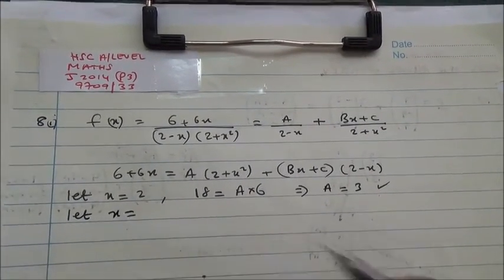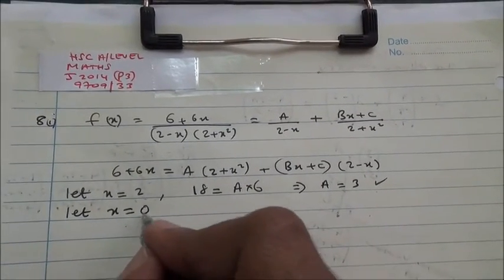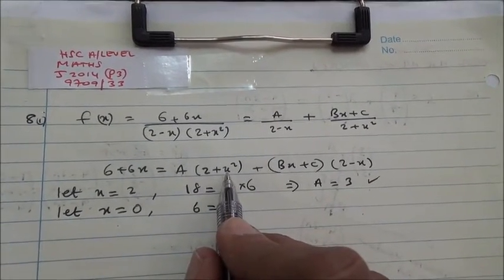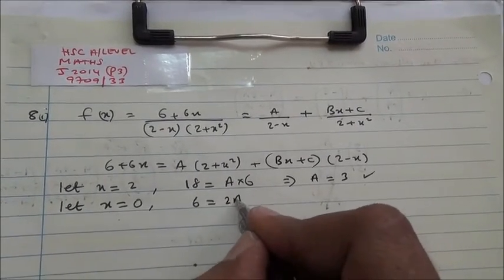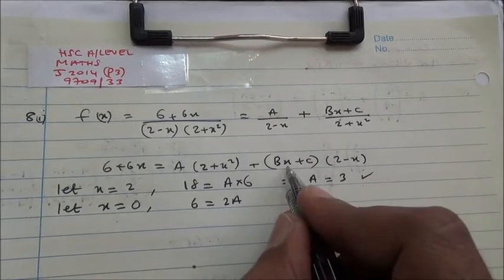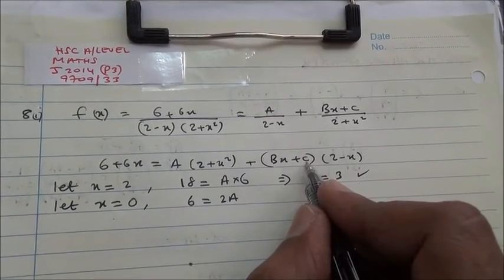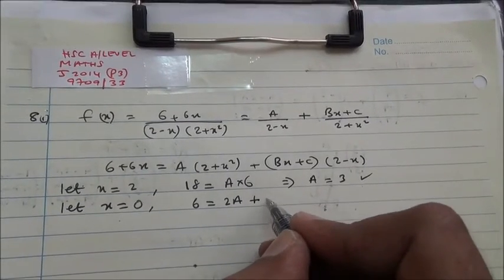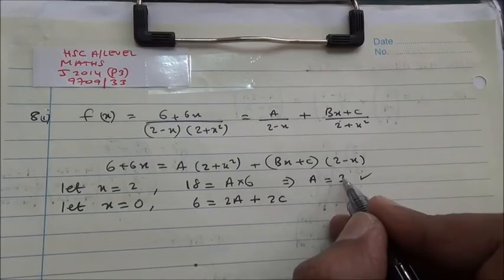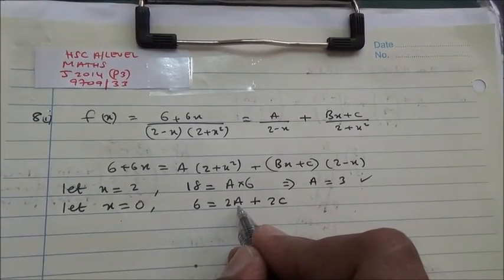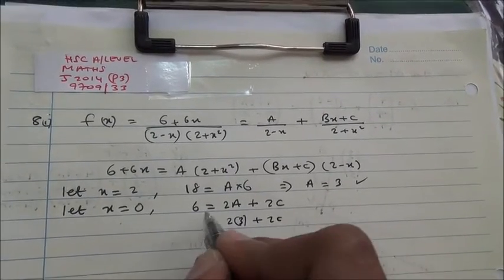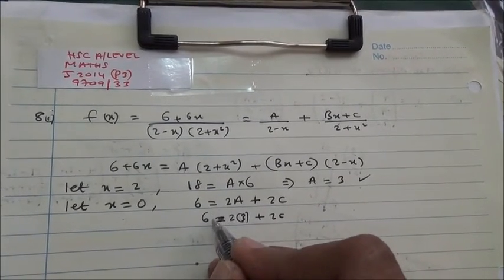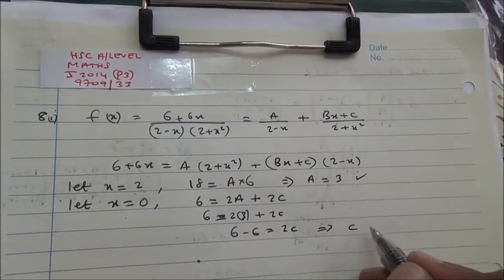Then we let x equal to 0. So 0 times 6 is 0, plus 6 is 6. We have 6 equal to 0 plus 2 squared times a, which is 2a. The bx term gives 0 times b equals 0, so 2 minus 0 is 2, and c times 2 gives 2c. So we have 2a plus 2c equals 6. We know a equals 3, so 2 times 3 plus 2c equals 6, giving 6 plus 2c equals 6, therefore c equals 0.